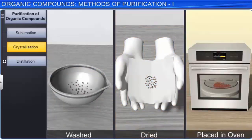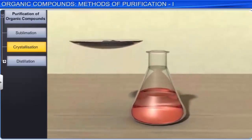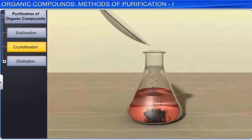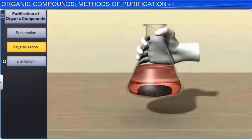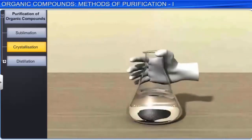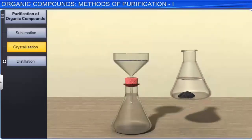Sometimes impurities impart color to the solution. To remove such impurities, the filtrate is passed through activated charcoal, which adsorbs the impurities. The solution is then filtered and recrystallized as described.